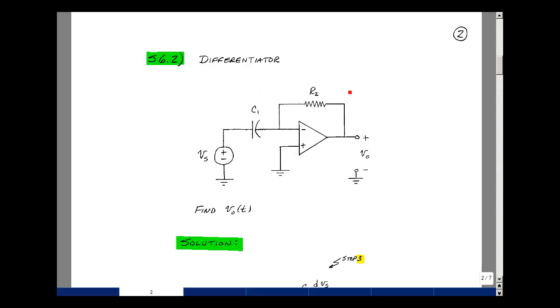Given this op-amp circuit with one resistor and one capacitor, can you solve for V out of T given V sub S of T? Let's write everything we know on the schematic and see if we can solve for V out.